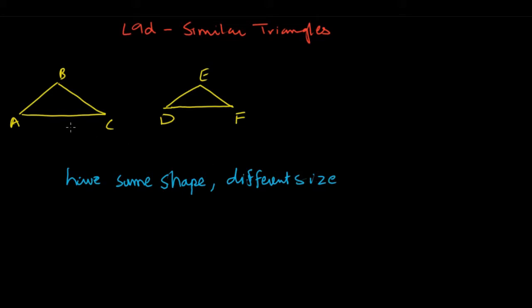Let's say we have these two triangles: triangle ABC and triangle DEF. Now, if these two triangles are similar triangles, it means two things.